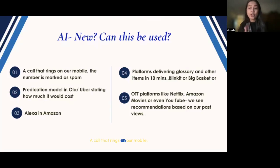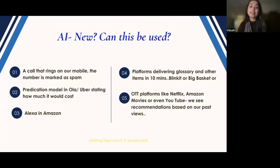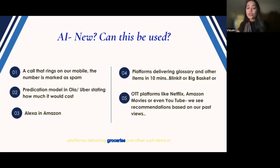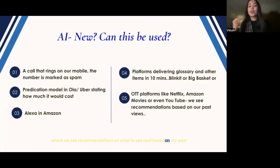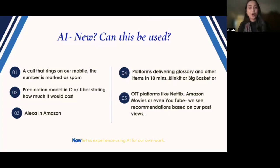A call that rings on our mobile where the number is marked as spam — that's the result of AI. The pricing model in Ola or Uber stating how much it would cost is again AI. Alexa and Amazon, platforms delivering groceries in 10 minutes through Blinkit or Big Basket, OTT platforms like Netflix or Amazon Movies, or even YouTube where we see recommendations on what to see next based on our past views — the list is long. Thus, we have all experienced the use of AI. Now let us experience using AI for our own work.